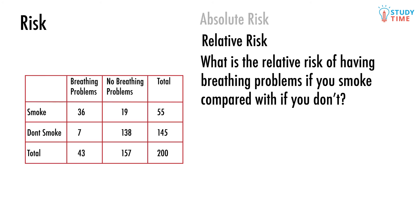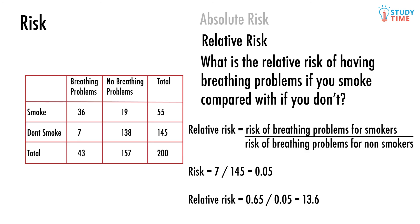Now let's look at the relative risk. What is the relative risk of having breathing problems if you smoke compared with if you don't? The equation we're going to be using to figure out this relative risk is: relative risk equals risk of breathing problems for smokers divided by risk of breathing problems for non-smokers. Things are especially easy because we already know that the risk of getting breathing problems if you're a smoker is about 0.65.